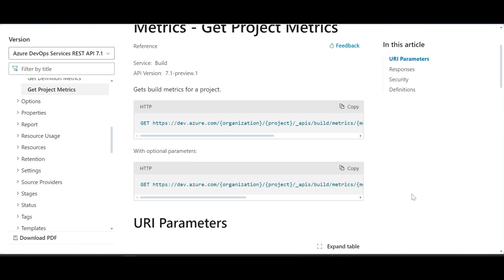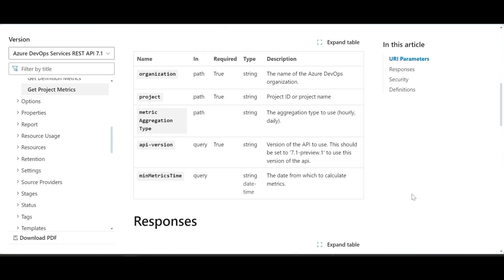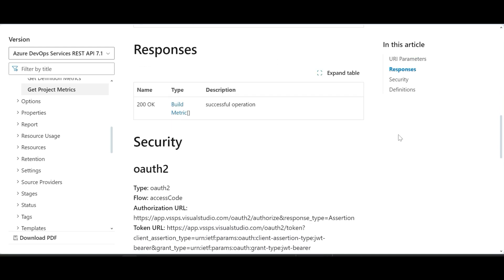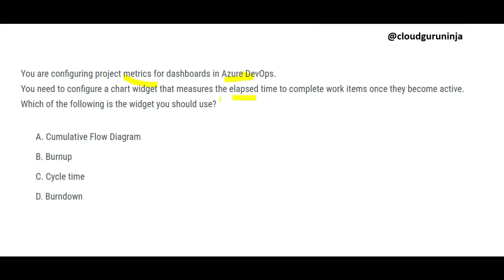To get project metrics, there is a specific syntax — it explains the metric, aggregation type, API version, and how the response comes back. The question asks you to configure a chart that measures the elapsed time to complete work items once they become active, and asks which widget you would use.